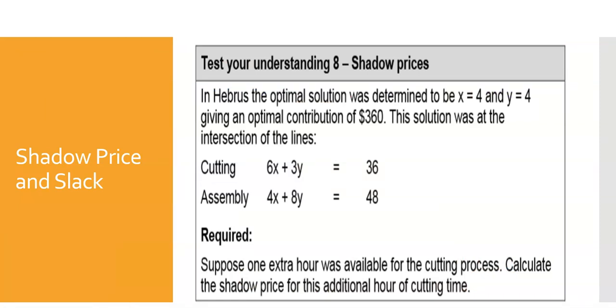The real issue here is, what I'm telling you is if I gave you an extra hour - one extra hour was available for the cutting process. So imagine I didn't have 36 but I had 37. So now my equation has changed: 6x + 3y = 37, and of course this remains the same - the hours in the assembly division remain 48. So the issue here now is what is my new optimal point?